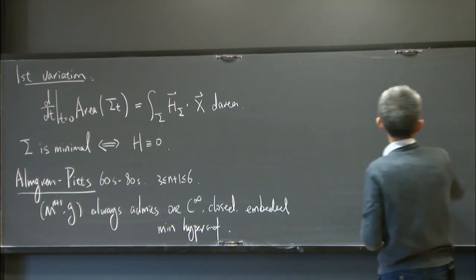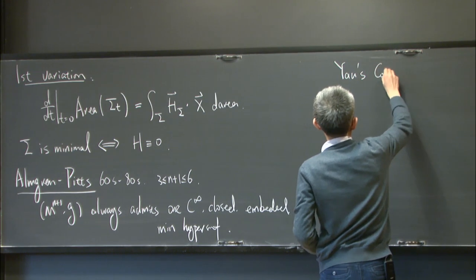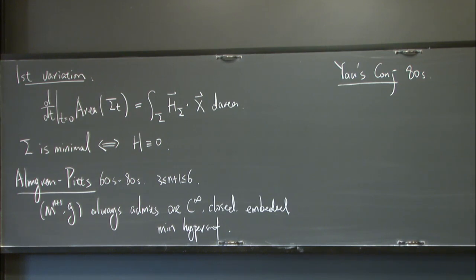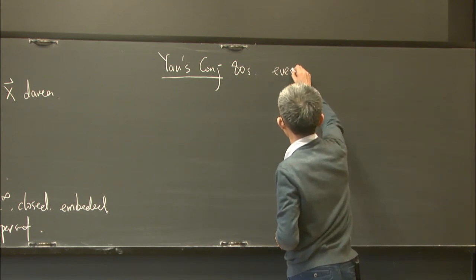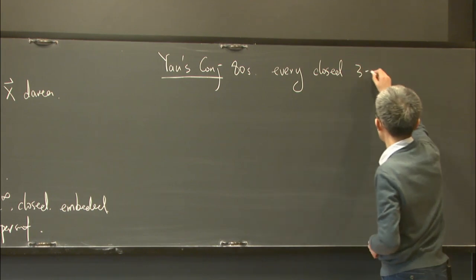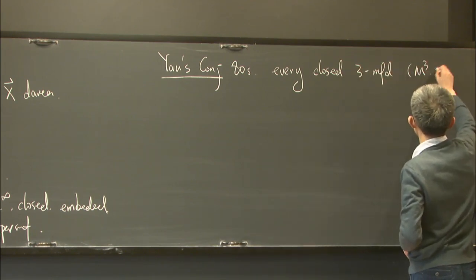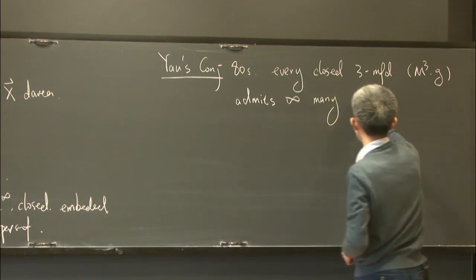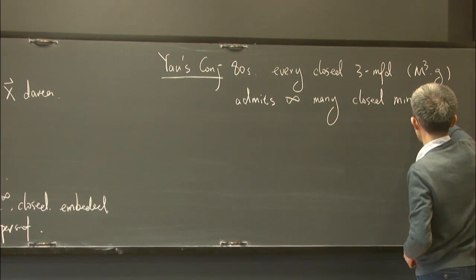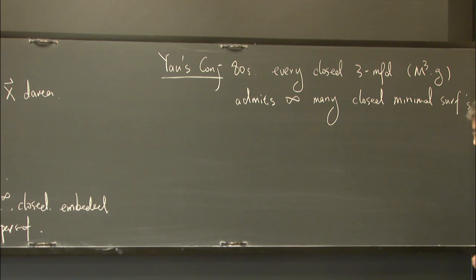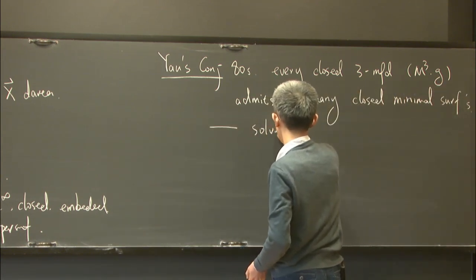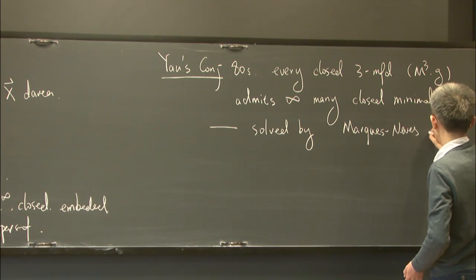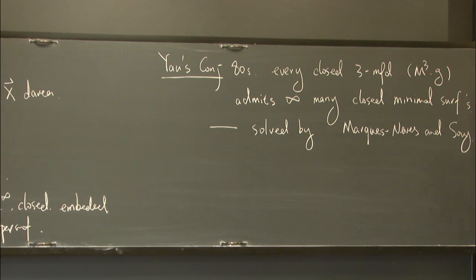The dimension range is due to the compactness theory, which has been extended by Schoen-Simon to higher dimensions, allowing a singular set. Motivated by this theorem, Yau posed this famous conjecture in the 1980s — that was another special year for geometry at the Institute — where Yau conjectured that every closed 3-manifold contains infinitely many closed minimal surfaces.